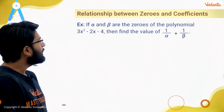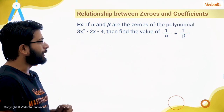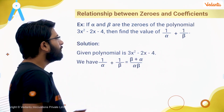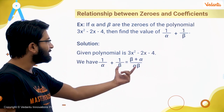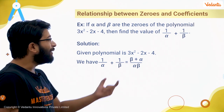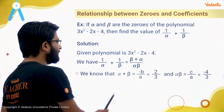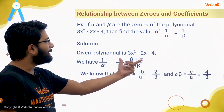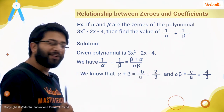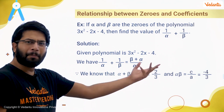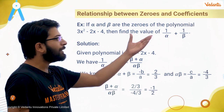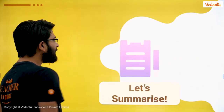Look at this problem: if alpha and beta are the zeros of this polynomial, find the value of 1 upon alpha plus 1 upon beta. First we simplify by taking the LCM, so we get (beta plus alpha) upon (alpha·beta). We know how to find alpha plus beta by minus b upon a, which comes out to be 2 upon 3. We find alpha·beta by c upon a, which gives minus 4 by 3. Simply substitute into the expression and you get the answer. Always try to first figure out what you actually have to find.